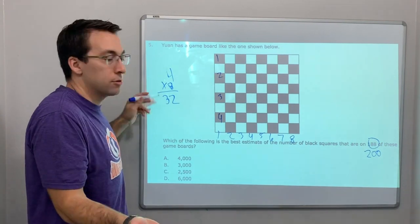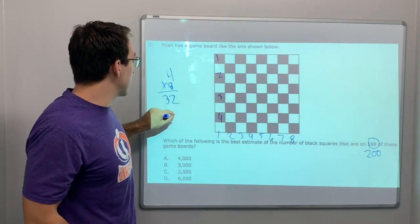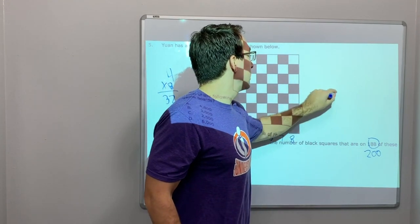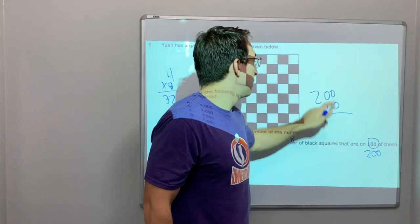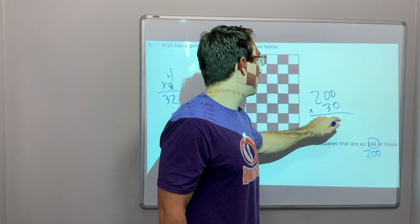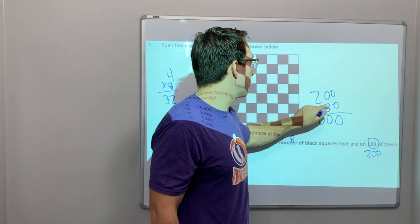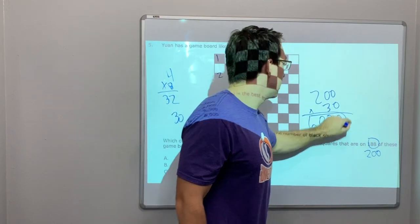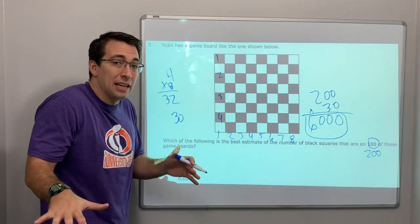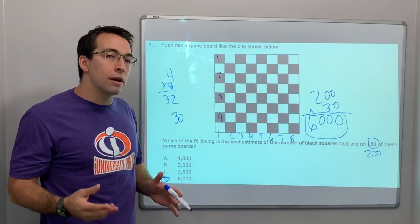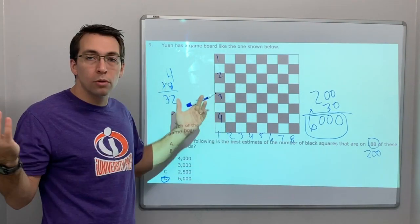Well, let's use, let's go, let's round. What is 32? We'll round it down to 30. So 200 times 30. We're going to start in the tens place, so we'll add a zero. And 3 times 0 is 0, 3 times 0 is 0, 3 times 2 is 6. There is roughly about 6,000 black squares on 200 boards. This is an estimate.